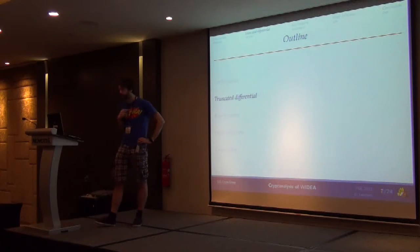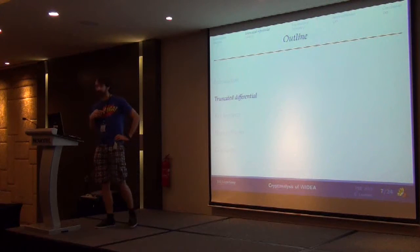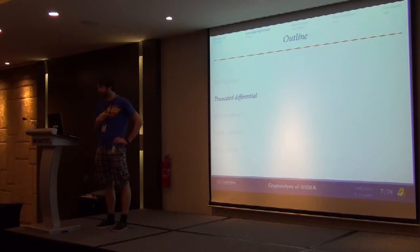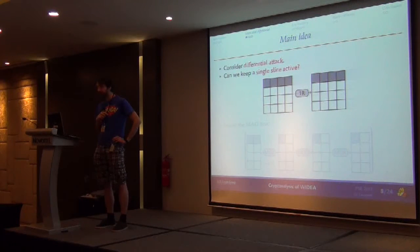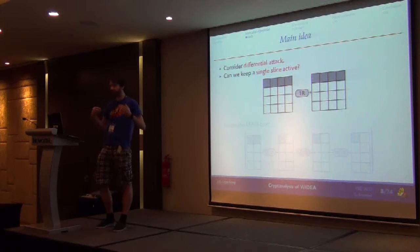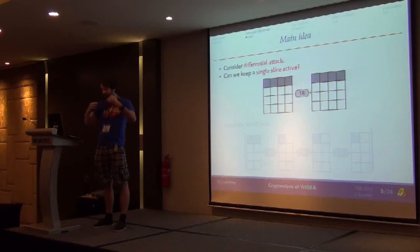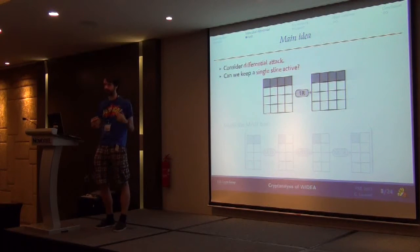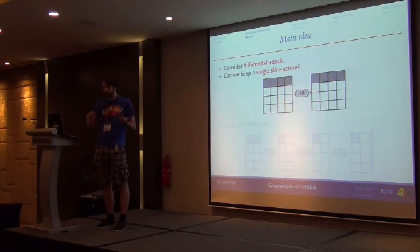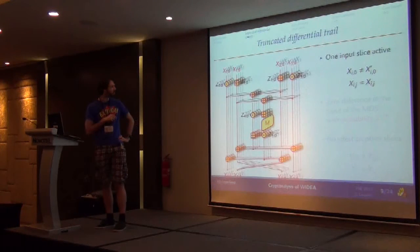Now I'm going to present our new attack on W-IDEA. It's based on a truncated differential. We're going to do something like a differential attack — we look at a pair of plaintexts. What we try to do is keep a single slice active, a single IDEA instance, and we want the difference to not spread to the others. Because if we can do this, then we just have one IDEA to look at, and it's going to be a lot easier. The design is supposed to prevent this — so how is it going to work?